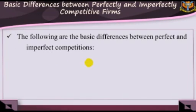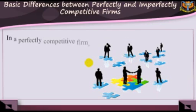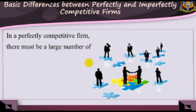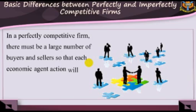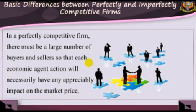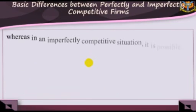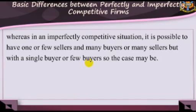Basic differences between perfectly and imperfectly competitive firms. 1. In a perfectly competitive firm, there must be a large number of buyers and sellers so that each economic agent's actions will not necessarily have any appreciable impact on the market price, whereas in an imperfectly competitive situation, it is possible to have one or few sellers and many buyers, or many sellers with a single buyer or few sellers.